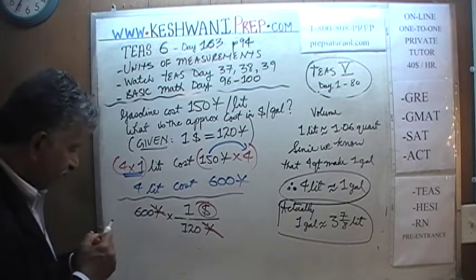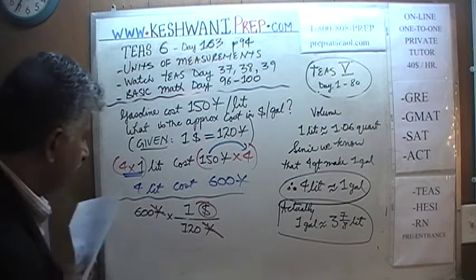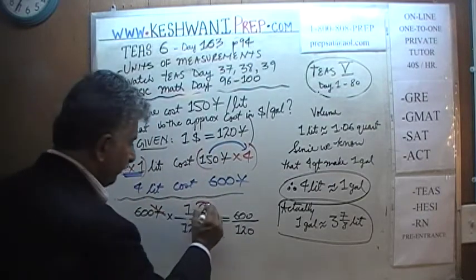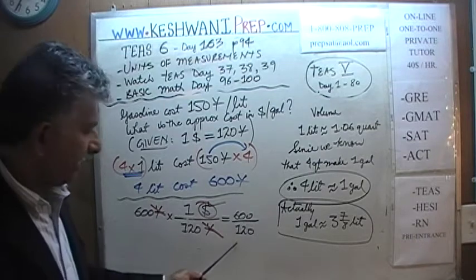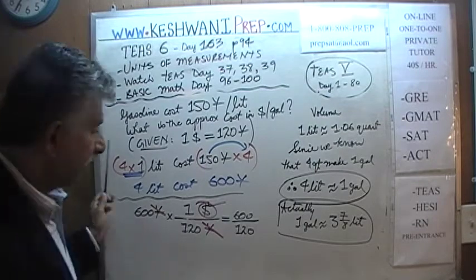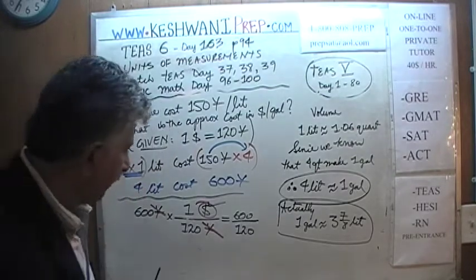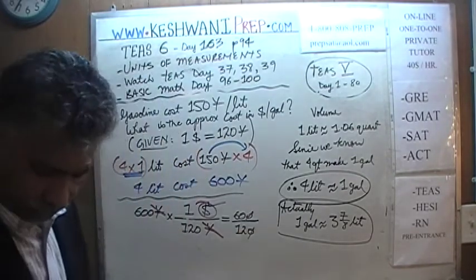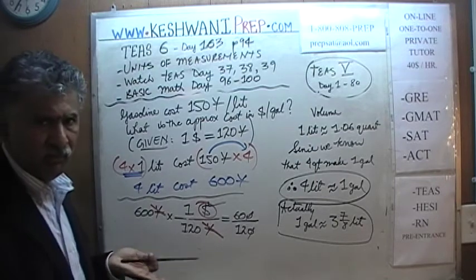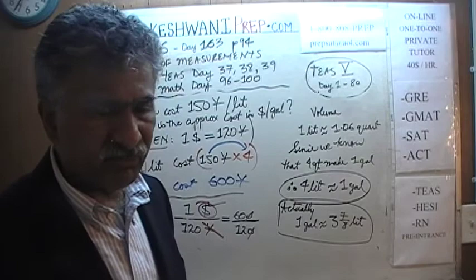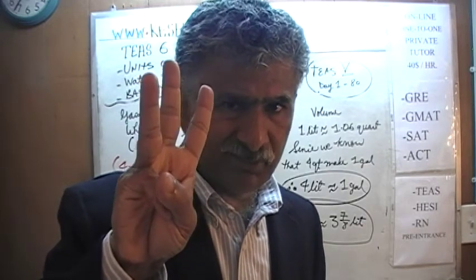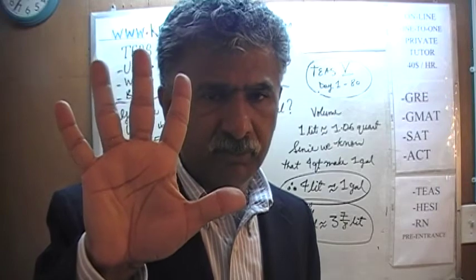So we divide 600 by 120, and the unit is going to be dollars. Both the top and bottom end in zero, so we can divide top and bottom by ten to cancel out the zeros — giving us 60 over 12. Now divide top and bottom by two: 12 divided by 2 is 6, and 60 divided by 2 is 30. We see even numbers again — divide top and bottom by two: 6 divided by 2 is 3, and 30 divided by 2 is 15. You should know your times tables — five twelves are sixty, so 12 fives are 60.